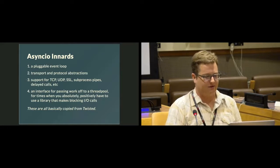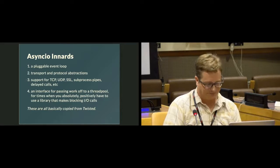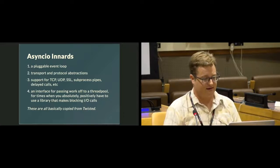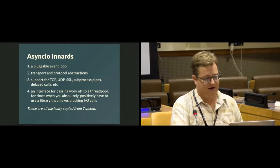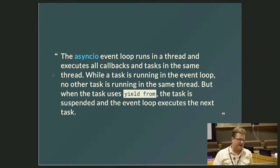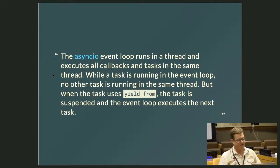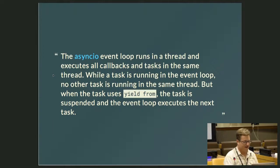It also provides an interface for passing work off to a thread pool for times when you absolutely positively have to use a library that makes blocking I/O calls. All those things are essentially the same in Twisted, just with different interfaces. The event loop runs in a single thread and executes all the callbacks and tasks in the same thread. While a task is running in the event loop, no other task is running in the same thread. When the task uses yield from, the task is suspended and the event loop is able to move on to the next task.